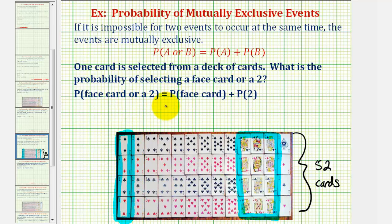So I think it's pretty easy to see that the probability of a face card or a two would be equal to twelve over fifty-two, the probability of selecting a face card, plus the probability of a two, which would be four out of fifty-two. So our sum here would be sixteen out of fifty-two.